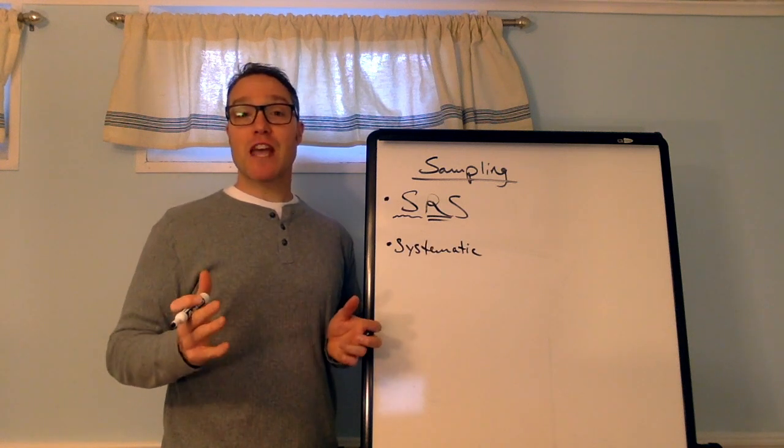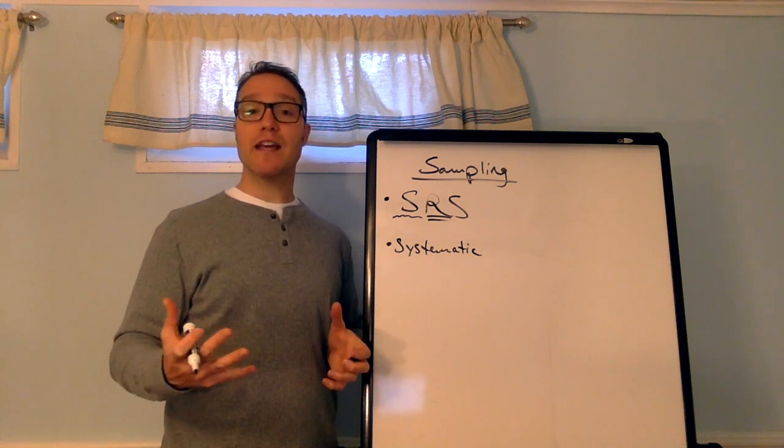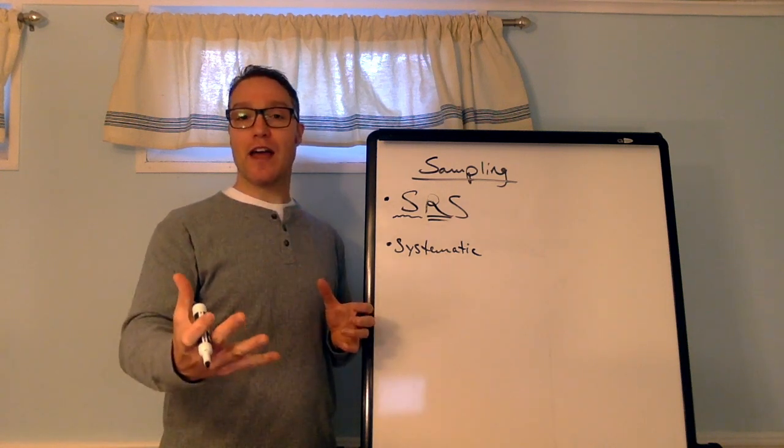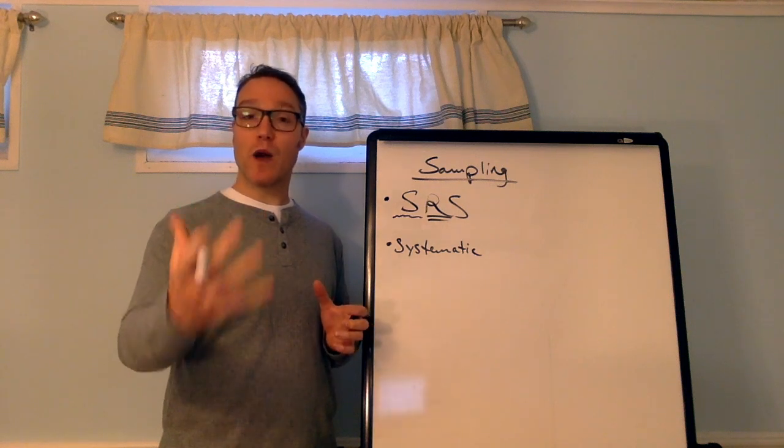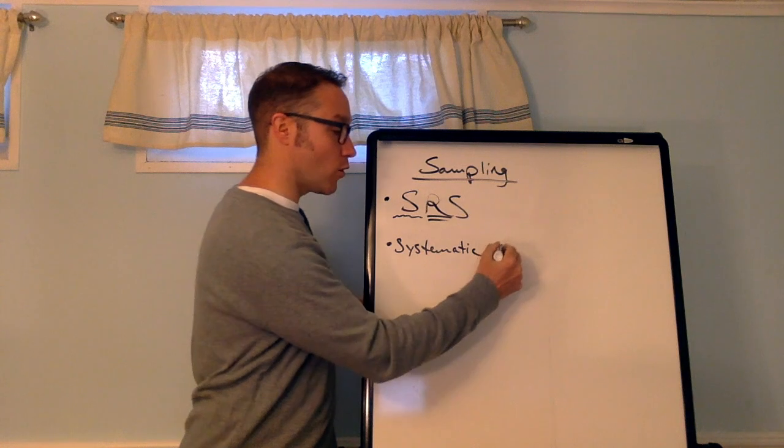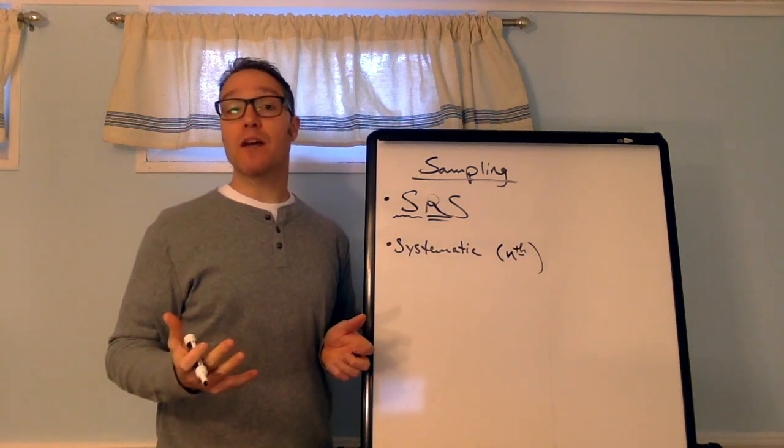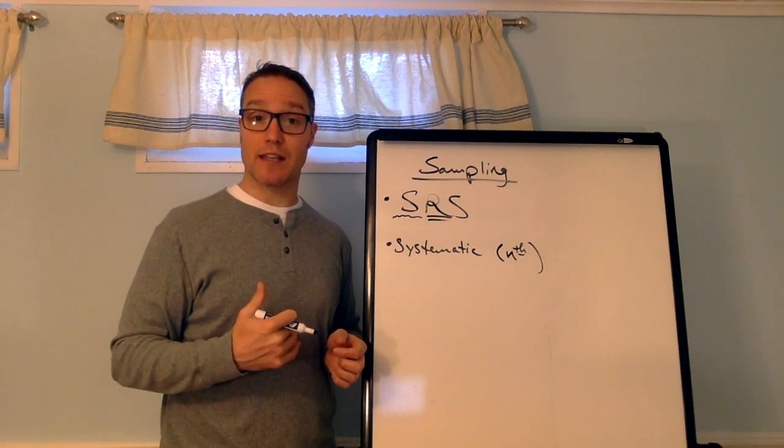Another type of sampling that's random is systematic sampling. And this is where you go to a crowded place or you have a high-traffic website or something like that, and you select every nth individual. Every nth individual. What do I mean by that? I mean pick a number. Pick a frequency. So let's say you want every tenth individual or something like that.